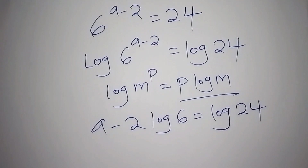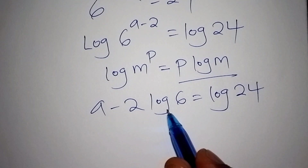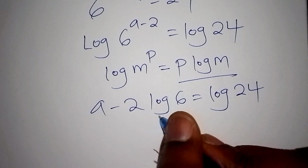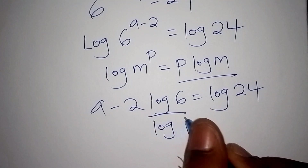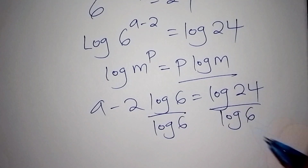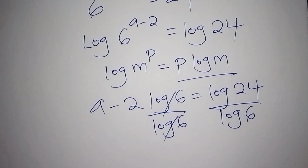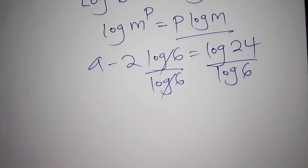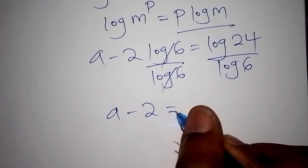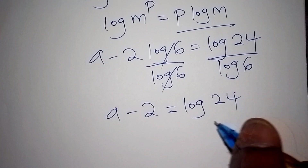From there, we want to isolate a minus 2 on one side. So we divide both sides by log 6, so that log 6 and log 6 cancel. We remain with: a minus 2 is equals to log 24 all over log 6.